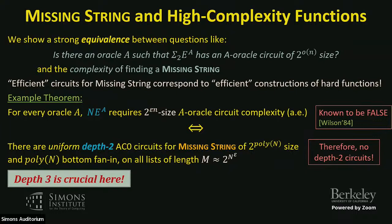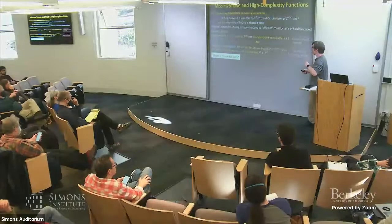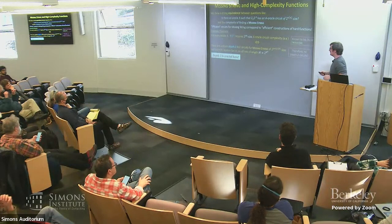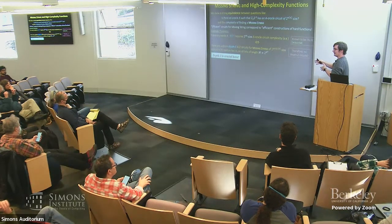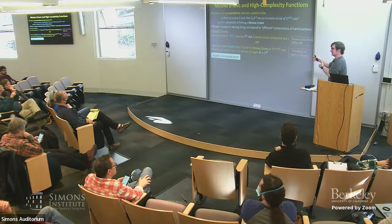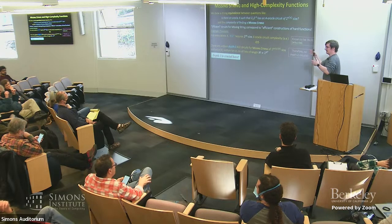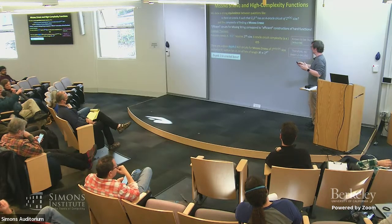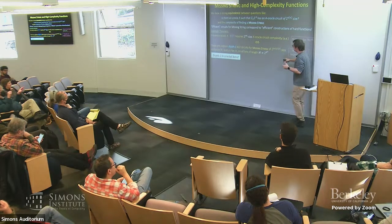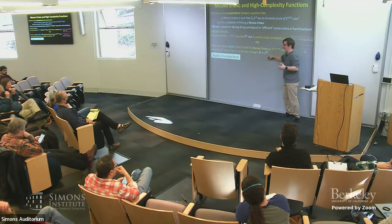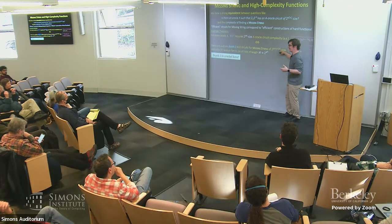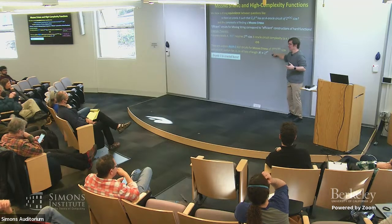Our best depth-3 AC0 lower bounds for functions in P are about 2^{sqrt(n)}. But for our purposes we only need a quasi-polynomial lower bound, not 2^{sqrt(n)}. The input length is N×M ≈ 2^{epsilon n} × n, and we want size 2^{poly n} — that's quasi-polynomial in the input length. So we don't need to beat the 2^{sqrt(n)} bound.